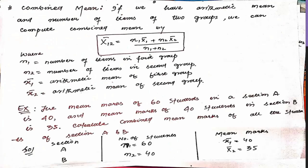Now there is one more concept: the combined mean. So what does combined mean mean? For example, if you have two groups — this is one set of data and this is another set of data — you can compute a combined mean across both groups.